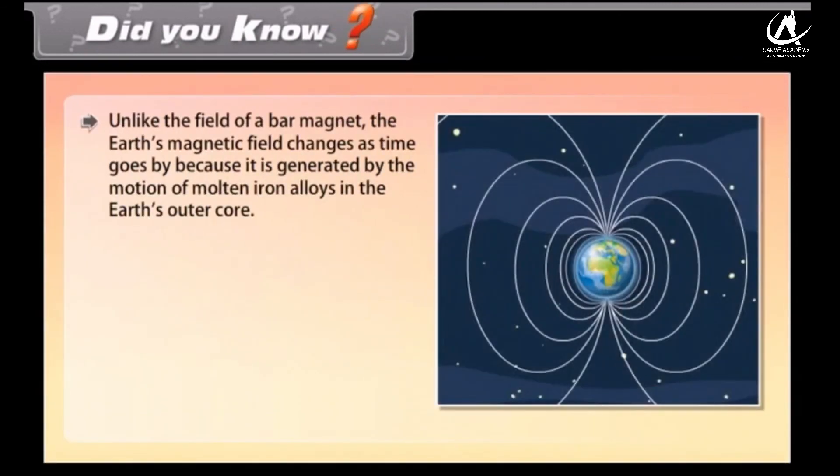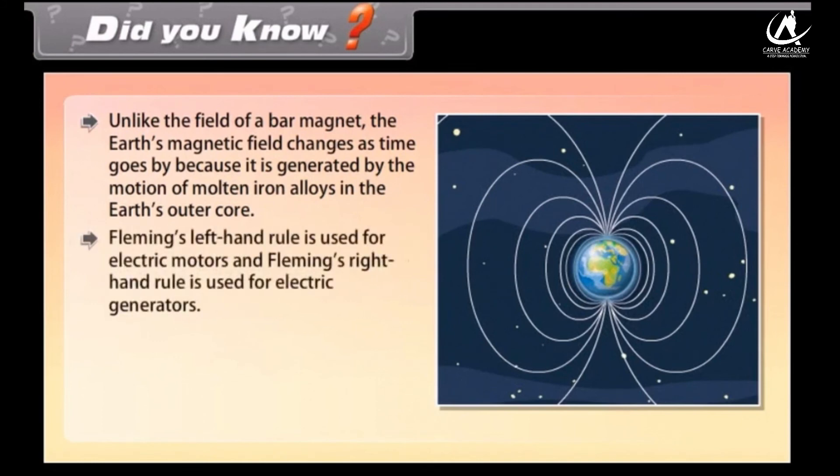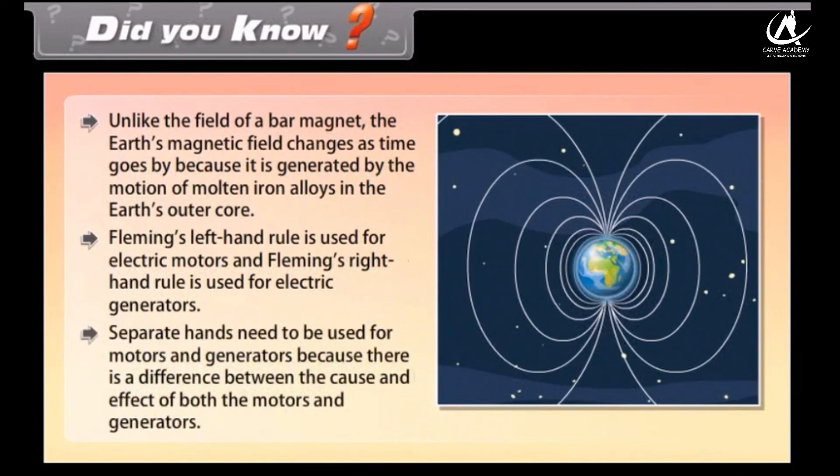Did you know? Unlike the field of a bar magnet, the earth's magnetic field changes as time goes by because it is generated by the motion of molten iron alloys in the earth's outer core. Fleming's left-hand rule is used for electric motors and Fleming's right-hand rule is used for electric generators. Separate hands need to be used for motors and generators because there is a difference between the cause and effect of both the motors and generators.